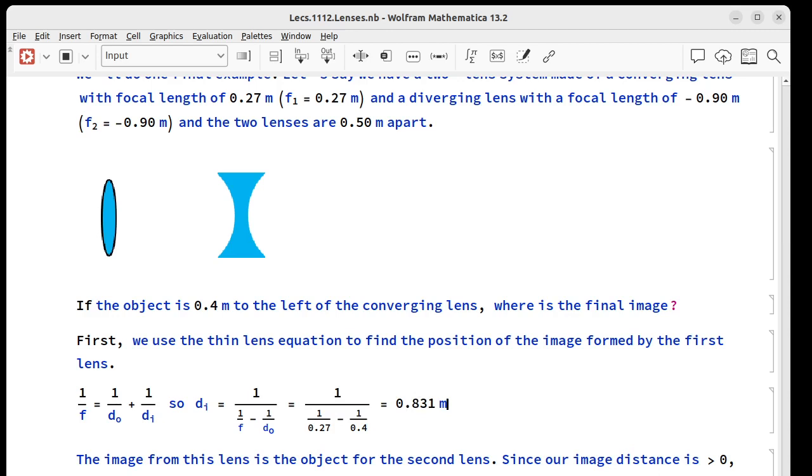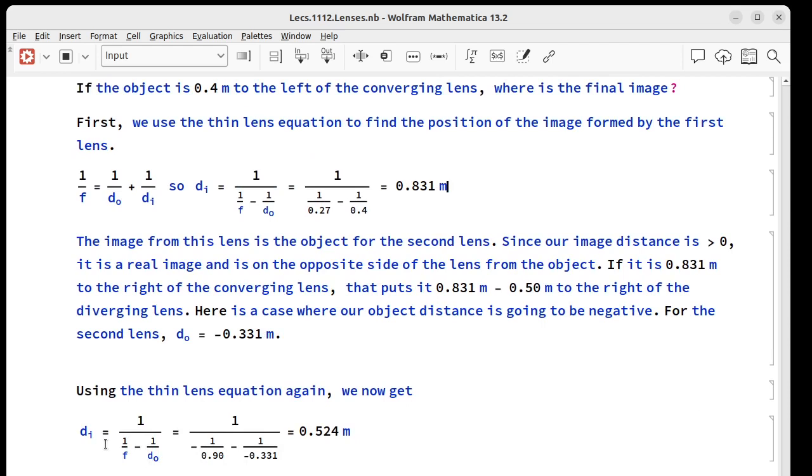Our image distance is greater than 0, so it's a real image, and it's over here to the right of this lens. If it's 0.831 meters to the right of this lens, that means it's 0.831 minus 0.5 or 0.331 meters to the right of this lens. Now, because we have two lenses, we can actually have a negative object distance for lens two, and we do. It would be negative 0.331 meters. So we go back to the thin lens equation. We've got 1 over focal length of the diverging lens, which is negative 0.9, minus 1 over the object distance, which is, as we said, negative 0.331, and we get 0.524 meters.